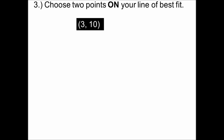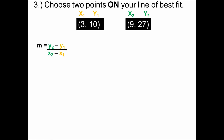The first thing I'm going to do is utilize those two points: 3 comma 10 and 9 comma 27. Now we need to label those as x1, y1 and x2, y2. I'm going to consider 3 comma 10 as my first point, so that means x1 equals 3 and y1 equals 10. That makes 9 comma 27 my second point, so x2 equals 9 and y2 equals 27. It doesn't matter which one you call point one — you'll get the same answers.